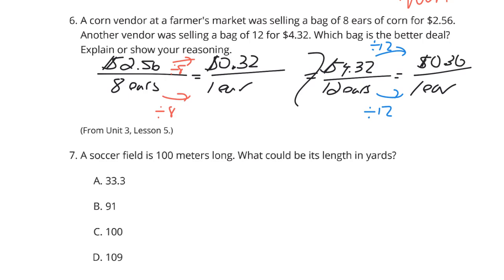We divide the last one by 12: $4.32 divided by 12 is 36 cents an ear. Unless you like paying more for the same thing, 32 cents per ear of corn is the better deal — assuming the corn is the same quality. That's all you really care about: saving money.